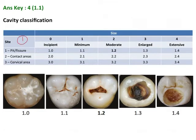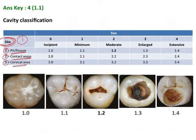The first digit denotes the site of the lesion. If it is 1, it stands for pit and fissure. If it is 2, that is contact areas, and 3 is the cervical area. Here, the lesion has been designated as 1 because it is on the pits and fissures. So the first digit denotes the site.